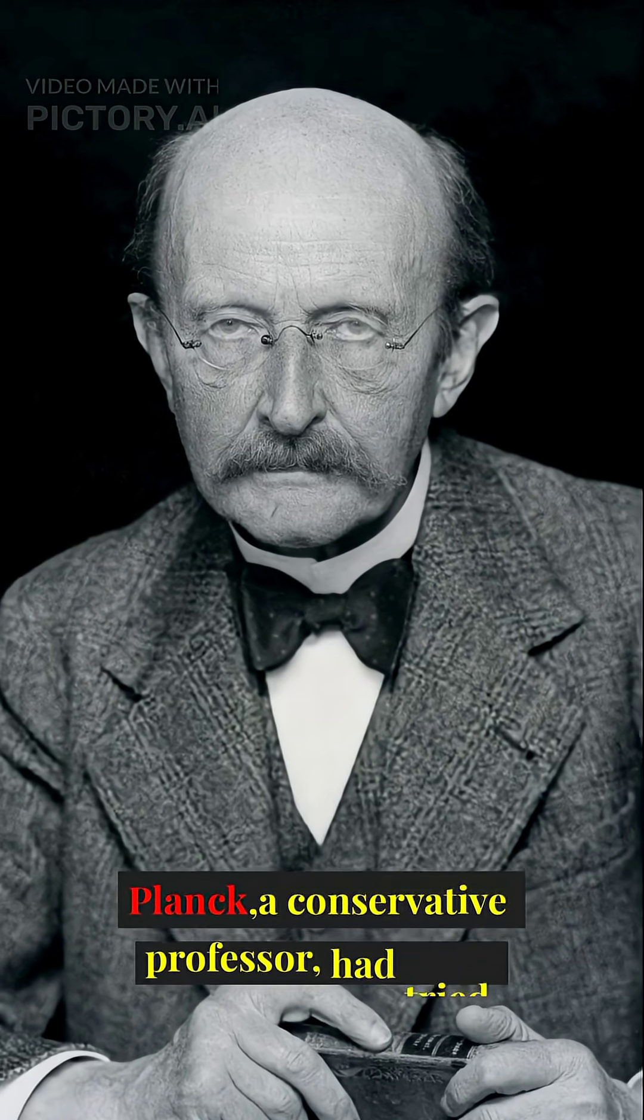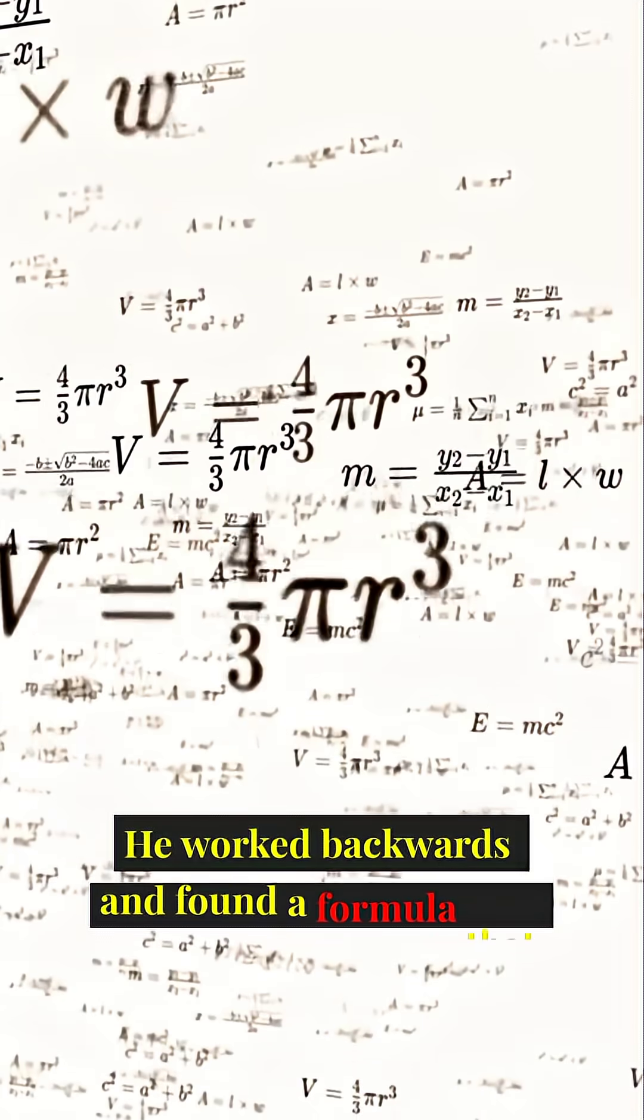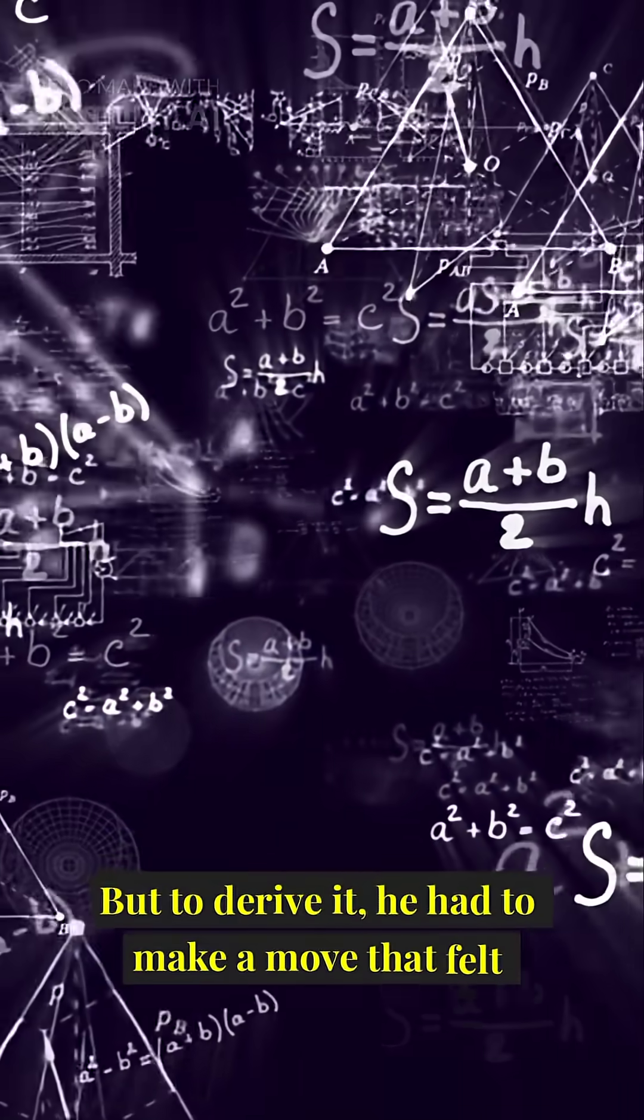Planck, a conservative professor, had tried everything. He worked backwards and found a formula that perfectly matched experiments. But to derive it, he had to make a move that felt like cheating.